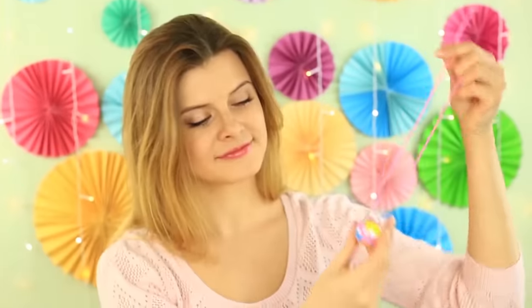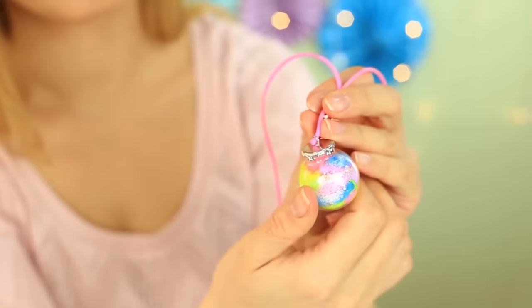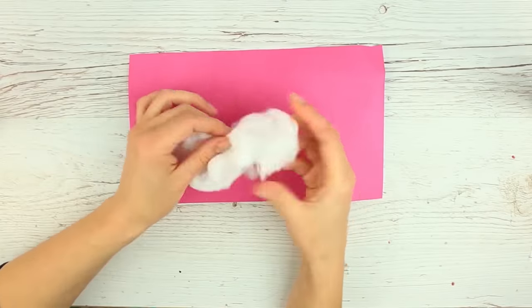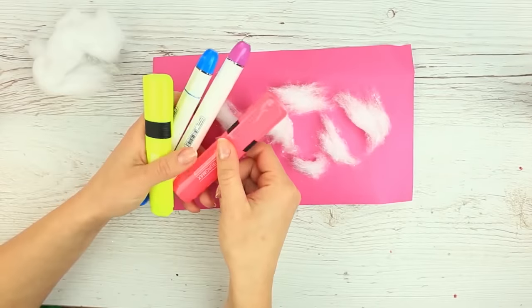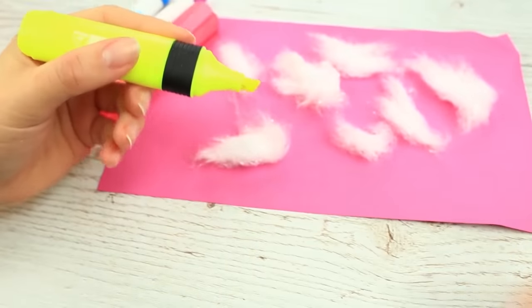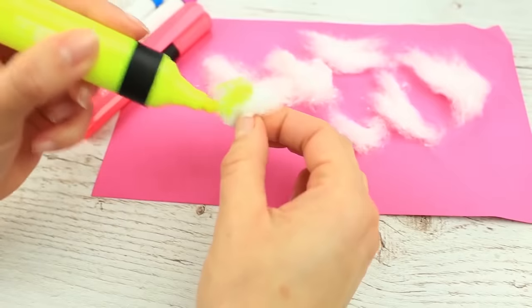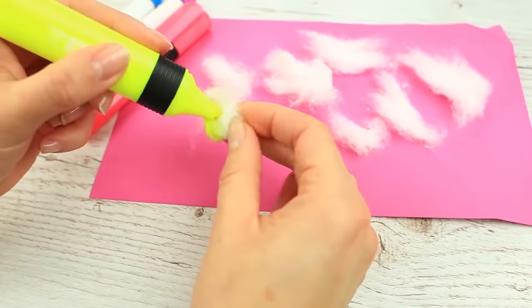The next accessory will be our dream about summer. We'll need some raw cotton. Tear it into several pieces. Take a few markers of bright colors. Open the ultra yellow one and color the cotton. The tint will glow under a black light.